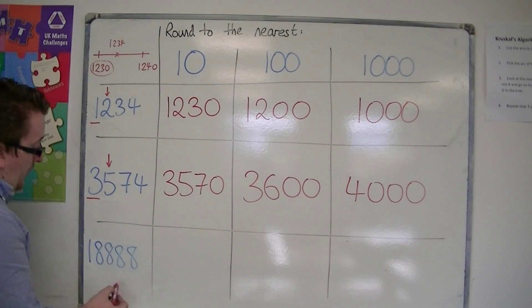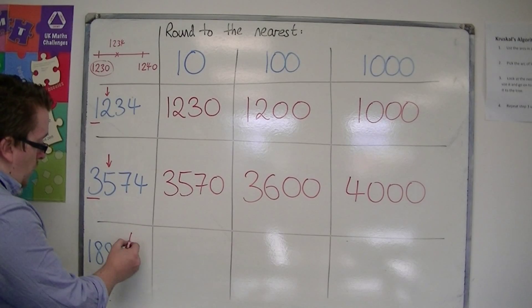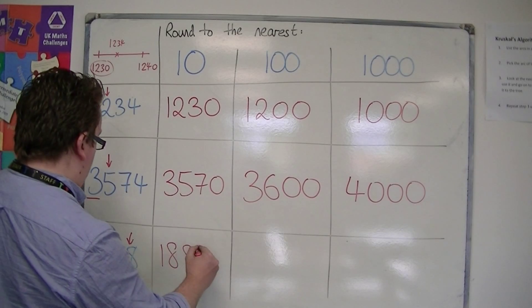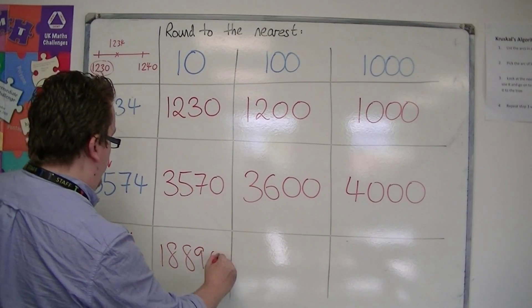On the final example, tens column, one to the right. We round up, so we have 18,890.